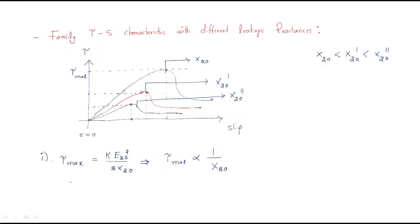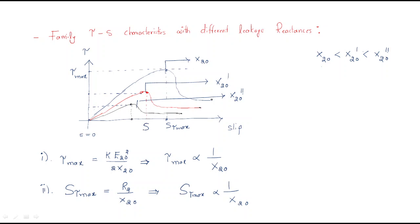The second thing to consider is the slip at torque maximum. The slip at torque maximum is given by r2 / X2. This means slip at torque maximum is also inversely proportional to X2. Observing the curves: for the first case the slip at torque maximum is highest, for the second case it decreases, and for the third case it decreases further, because leakage reactance is in the denominator.